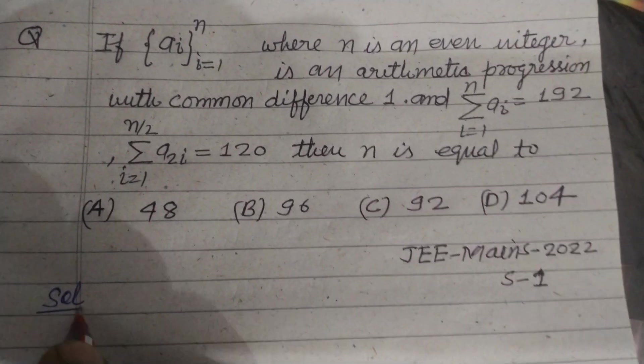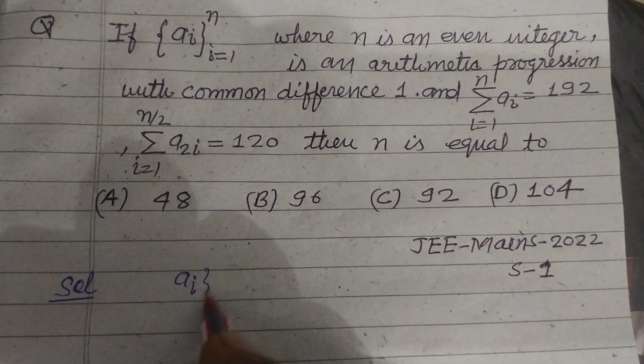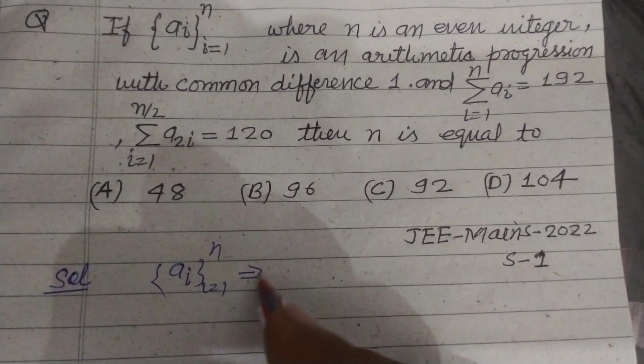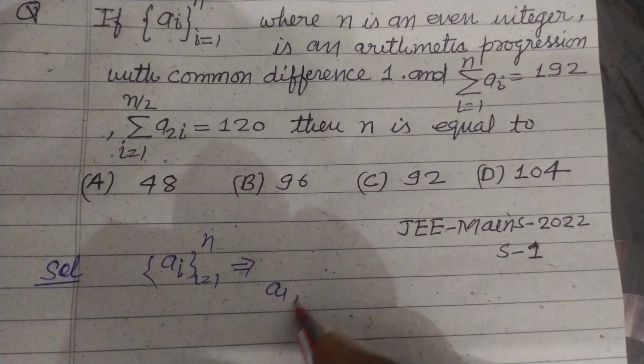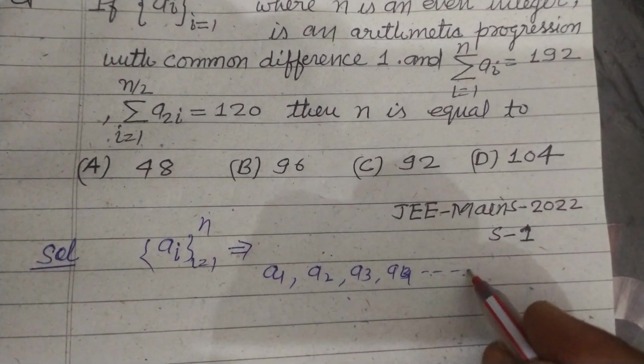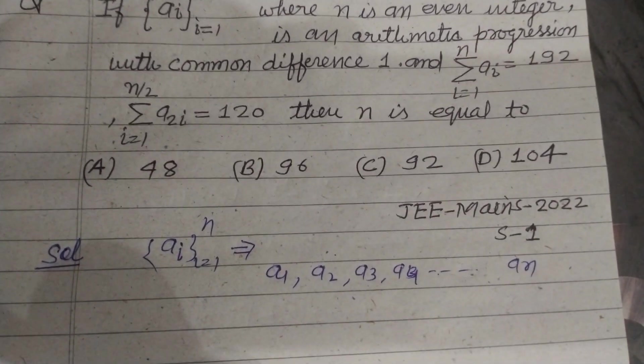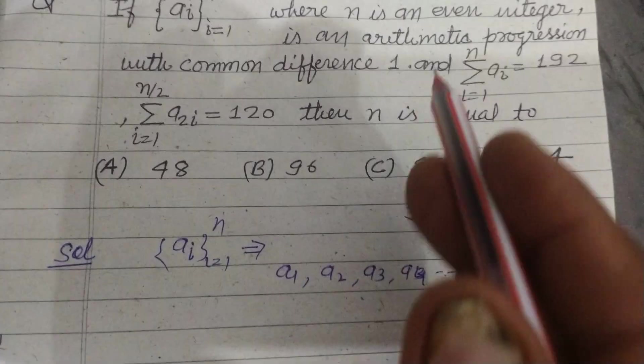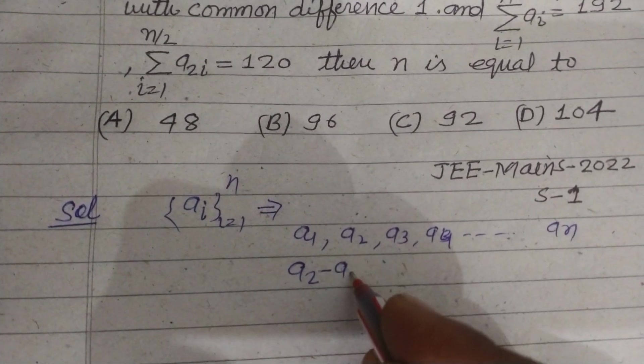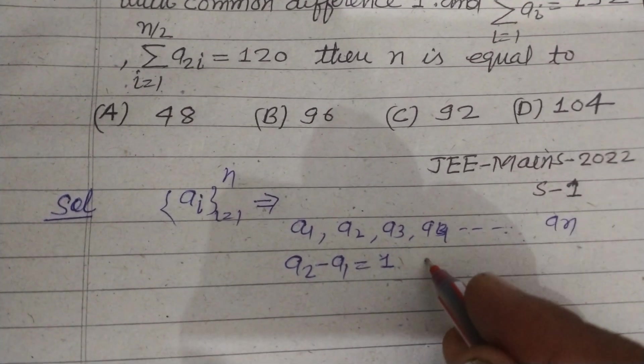This question is related to arithmetic progression. Here it is given ai, i=1 to n. We write it as a1, a2, a3, a4, and so on to an.